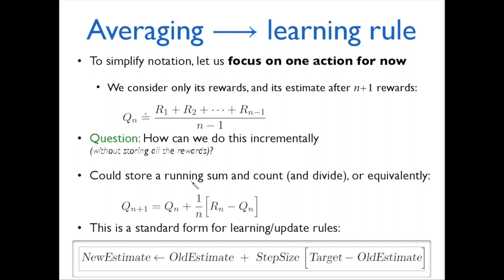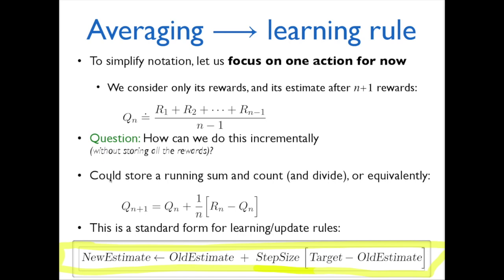This is our standard rule. We're going to turn the exhaustive sum form into a compact recursive form — that's what the next slide does. Getting used to this general form is important. This is one of the more important relationships in the course: it's a relationship between estimates over time and experience. We're going to have many forms of this over the course.